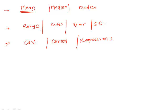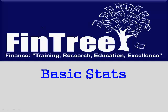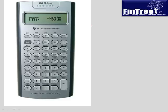Let's start with mean — different types and varieties. The first one is the arithmetic mean (AM). To calculate AM, if you have three numbers 10, 15, and 20, AM is simply the summation of all: 10 plus 15 plus 20, divided by 3.